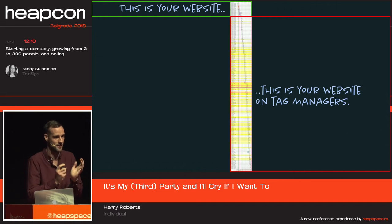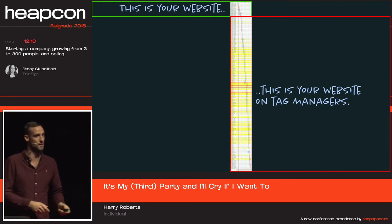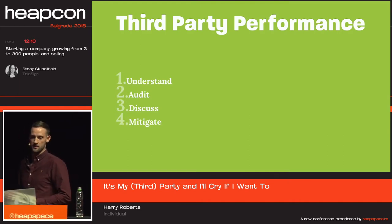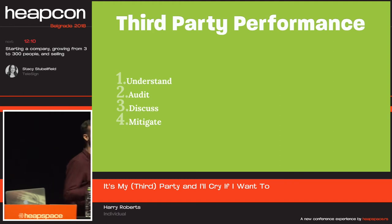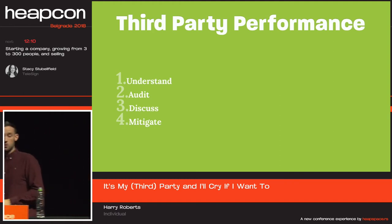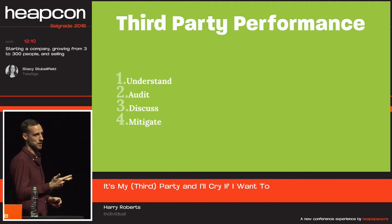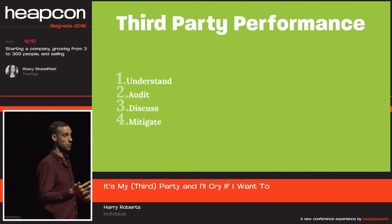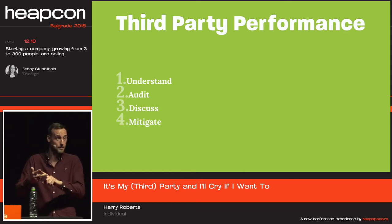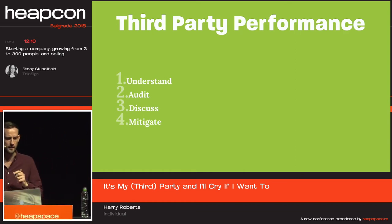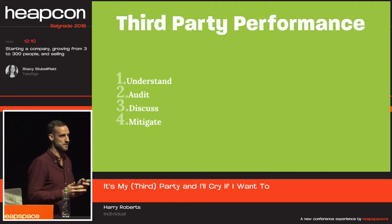This talk is going to be condensed into a short amount of time — I could do a full-day workshop on third-party performance. Over the next 30 minutes, we're going to break it into four main sections. One: understand the risk that third parties present. Two: audit and measure them. Three — the most difficult bit — discuss them with the third-party provider and with your marketing team. And finally, a brief section on starting to mitigate these things and how to design around these vulnerabilities.